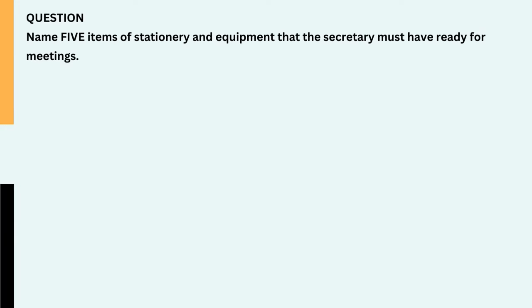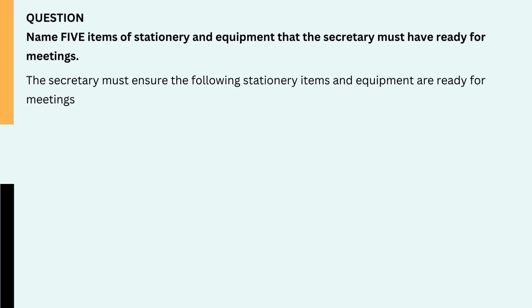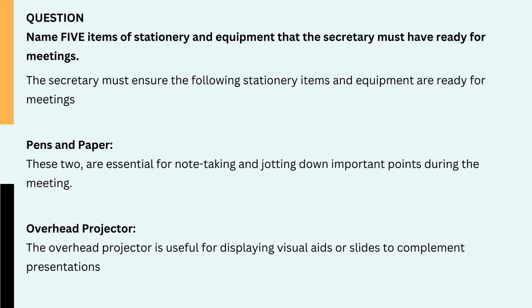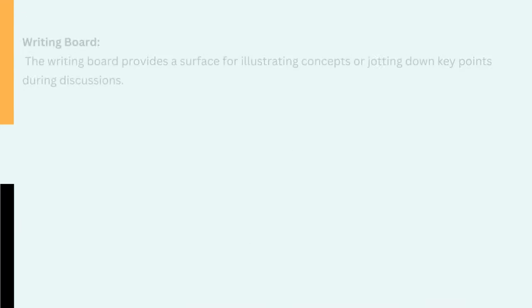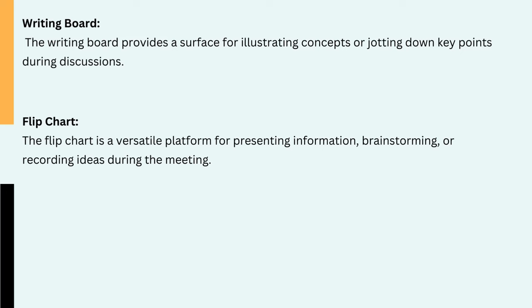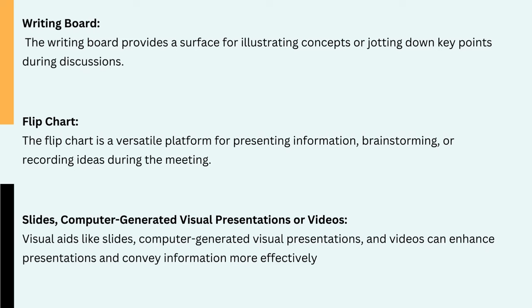Question: Name five items of stationery and equipment that the secretary must have ready for meetings. The secretary must ensure the following stationery items and equipment are ready for meetings: 1. Pens and paper — essential for note-taking and jotting down important points during the meeting. 2. Overhead projector — useful for displaying visual aids or slides to complement presentations. 3. Writing board — provides a surface for illustrating concepts or jotting down key points during discussions. 4. Flip chart — a versatile platform for presenting information, brainstorming, or recording ideas during the meeting. 5. Slides and computer-generated visual presentations or videos — visual aids like slides, computer-generated visual presentations, and videos can enhance presentations and convey information more effectively.